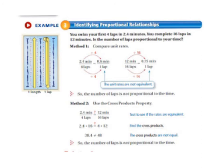Now let's move on with example number 3, identifying proportional relationships. You swim your first 4 laps in 2.4 minutes. You complete 16 laps in 12 minutes. Is the number of laps proportional to your time? So method 1,